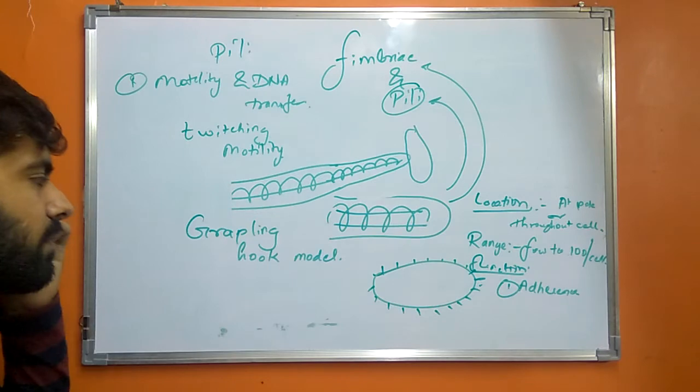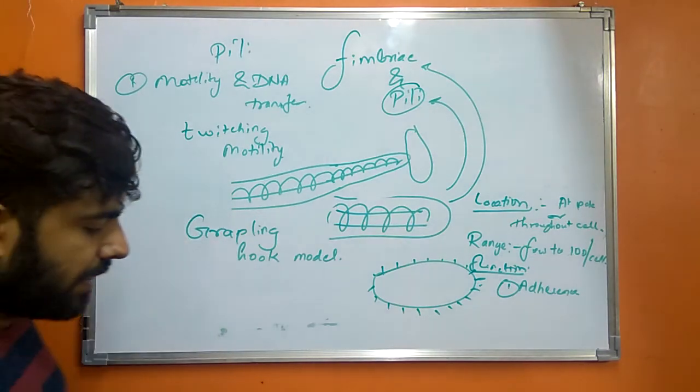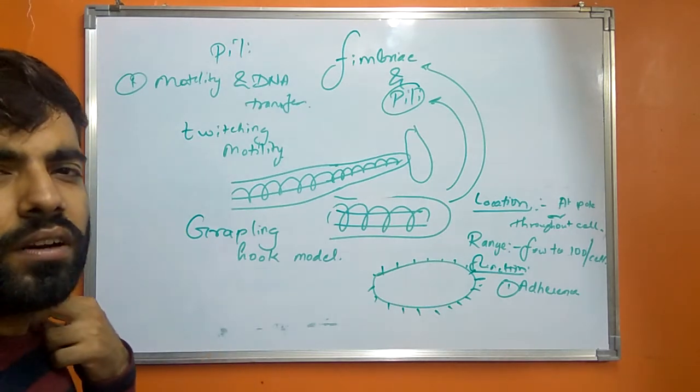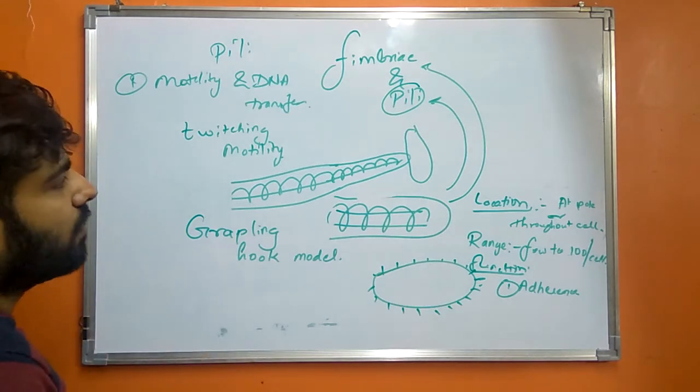The organisms that follow this twitching motility include some strains of E. coli, second Pseudomonas putida, third Neisseria gonorrhea.